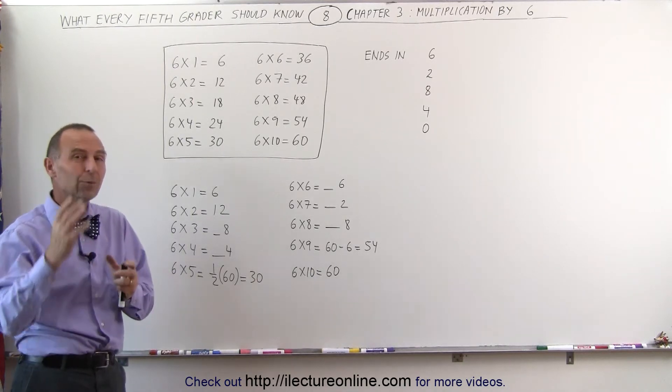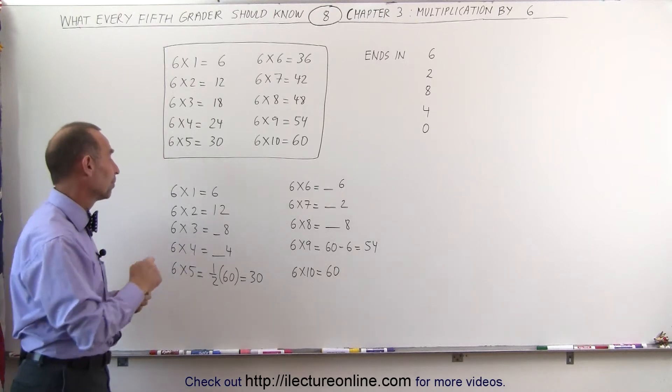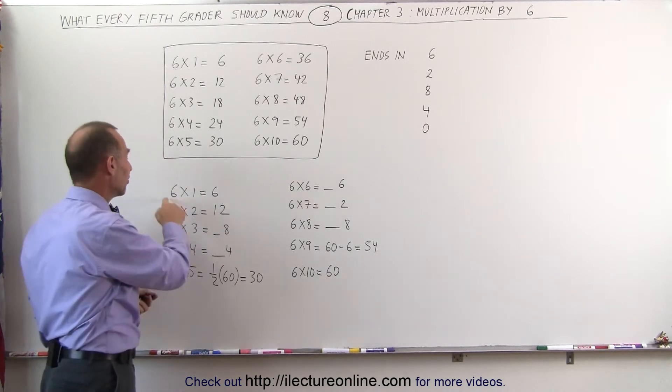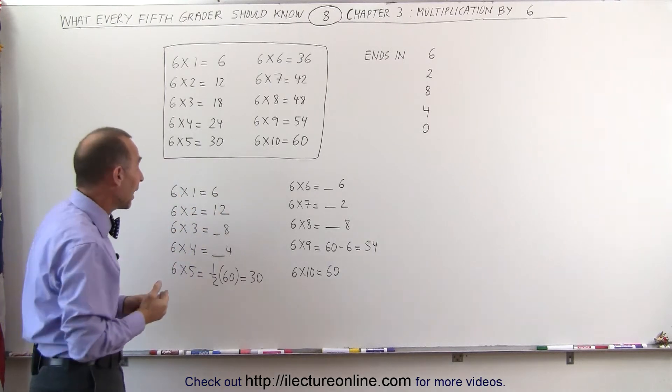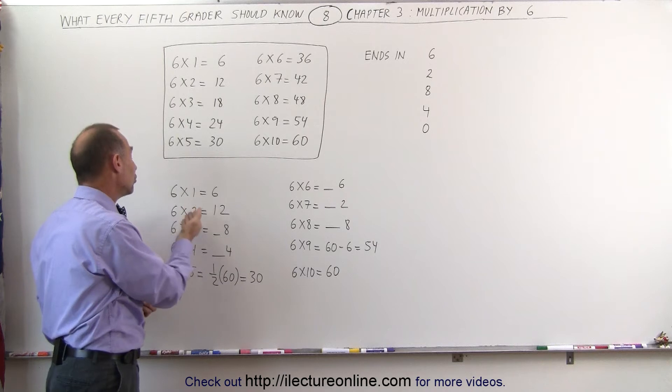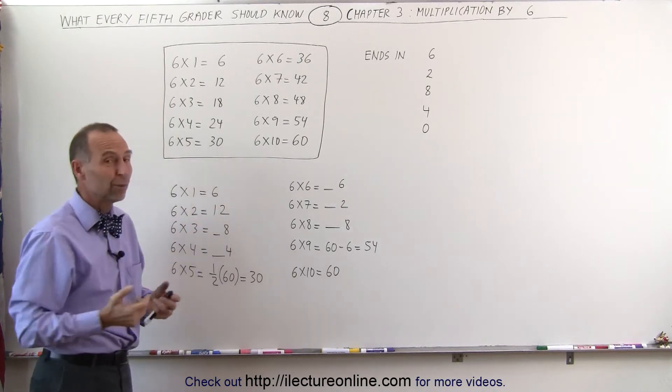If you forget one, how do we get that number? How do we get the answer? Well, for the first two, it's fairly straightforward. 6 times 1 is 6. Any time you multiply times 1, you get the same number back. And 6 times 2 is 2 times 6, which is 2 of them, which means it's 12.